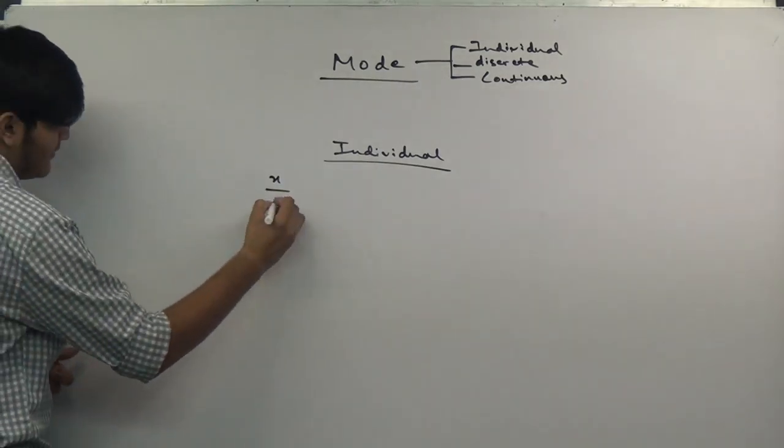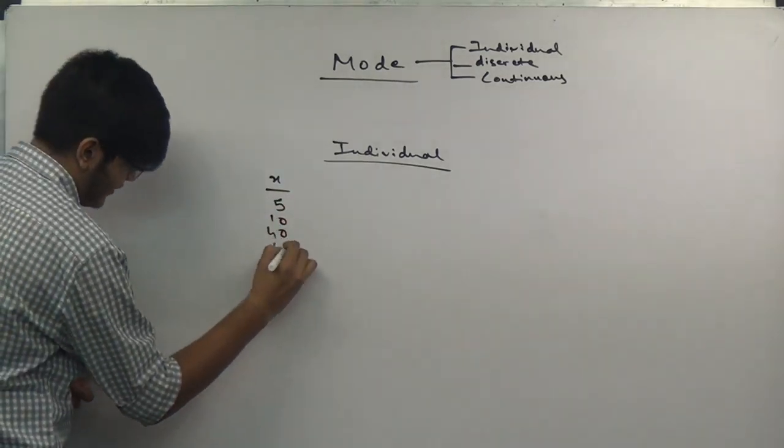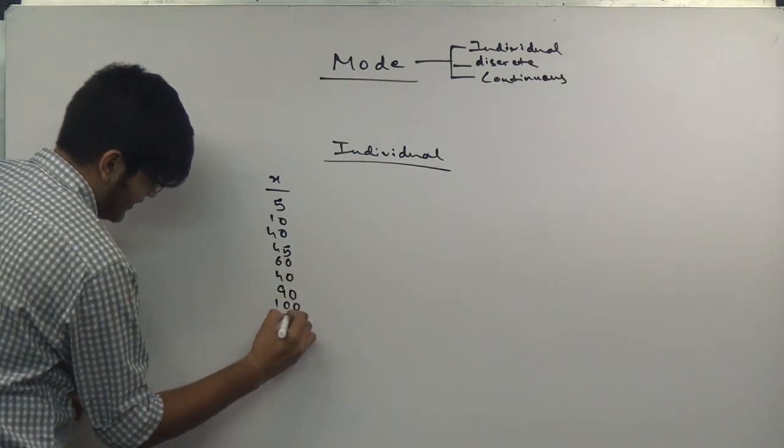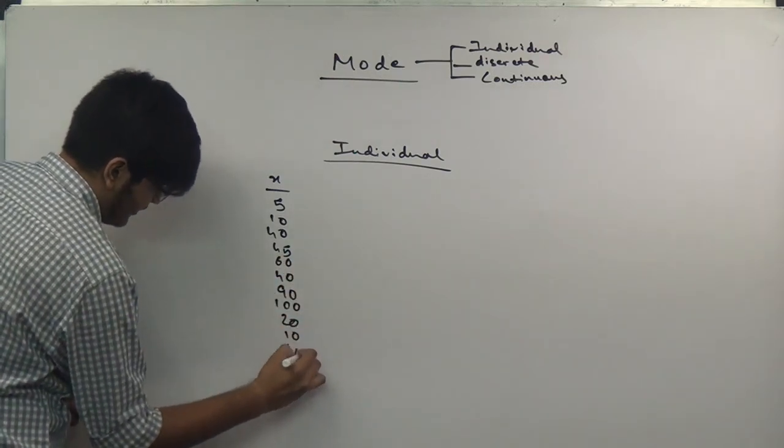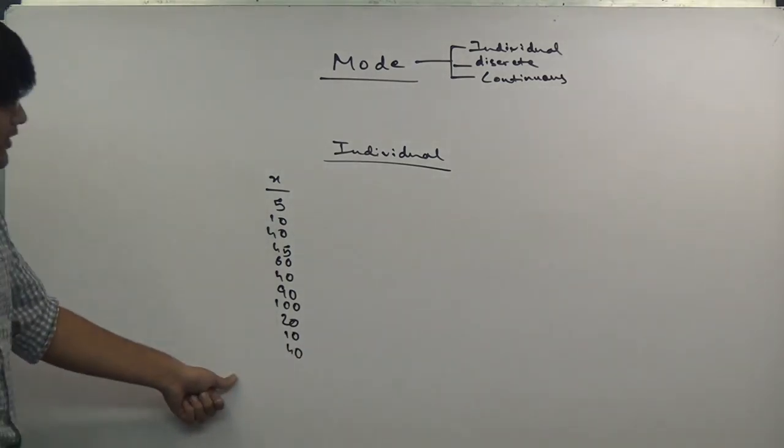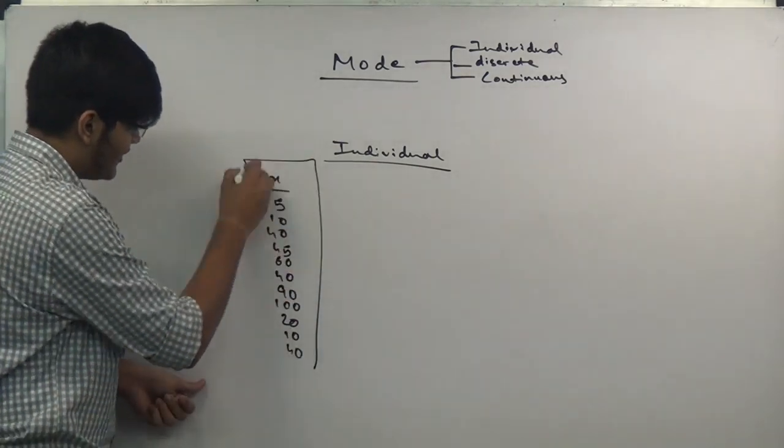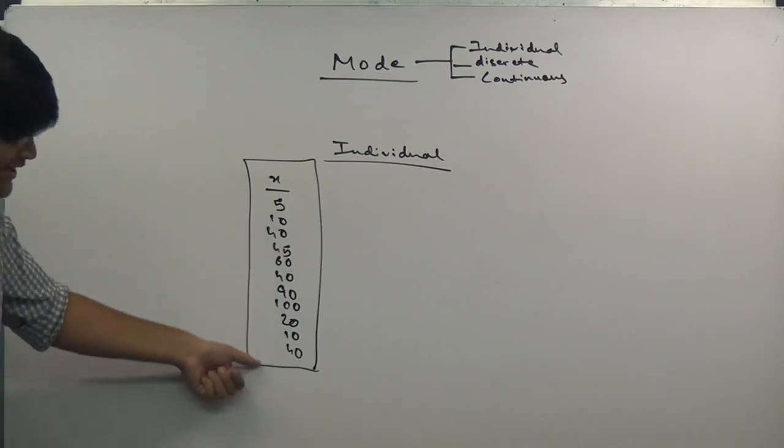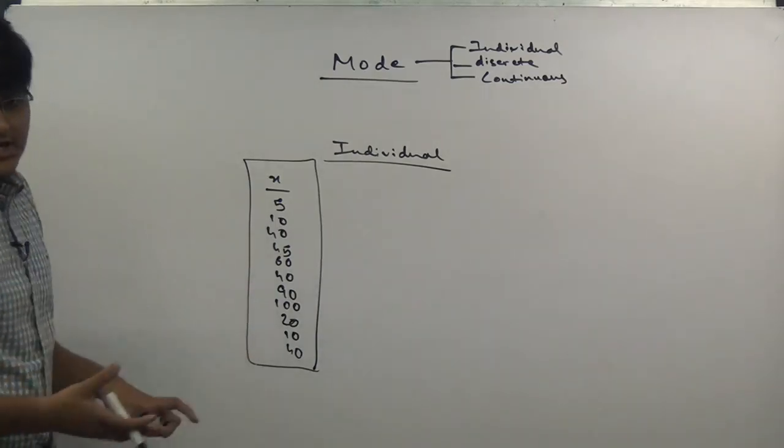For individual series, suppose x has 5, 10, 40, 45, 60, 40, 90, 100, 20, 10, 40. These observations are usually given in paragraph form, but first we'll make a chart with x and f.